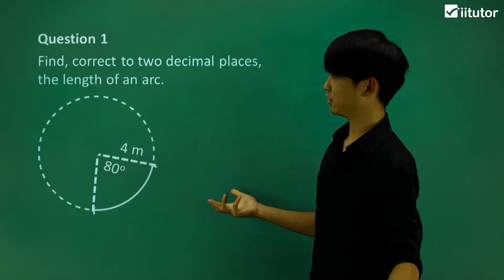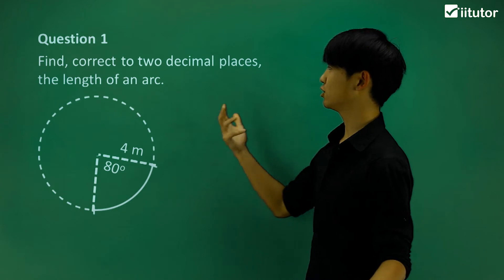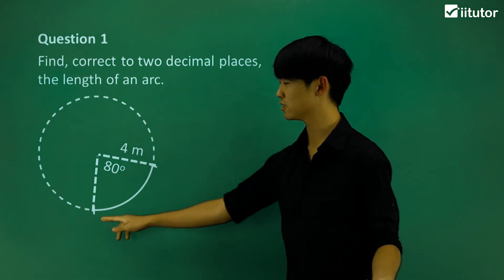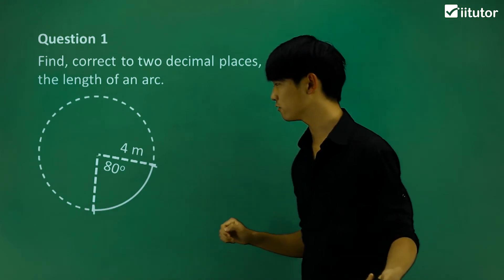Starting off with the first question, it says find correct to two decimal places the length of an arc. So this little length is what we're after.